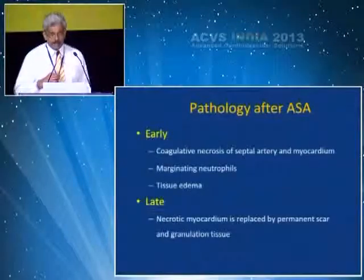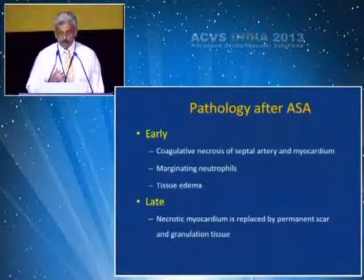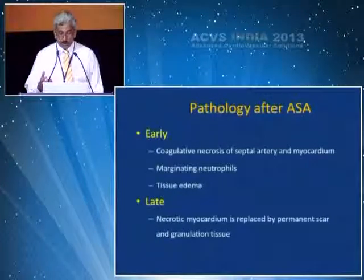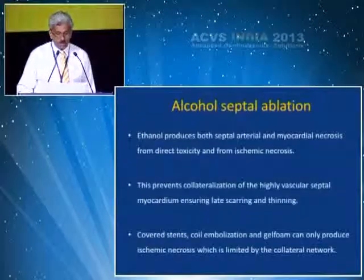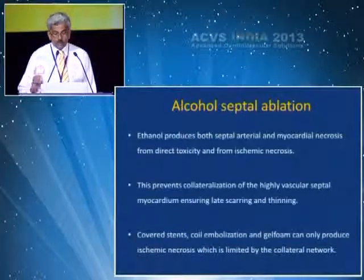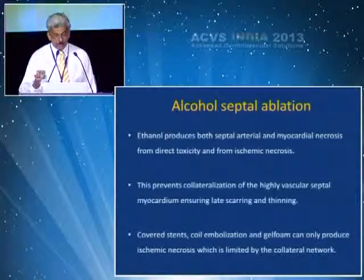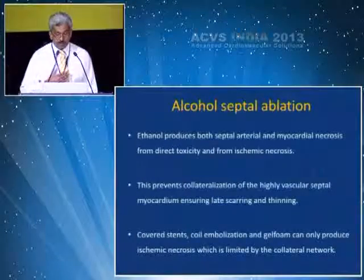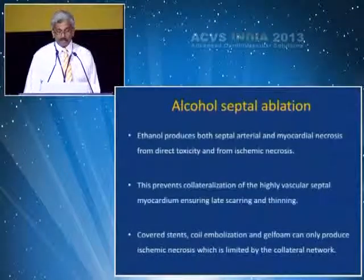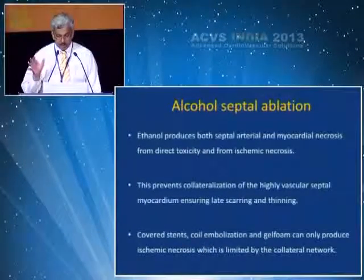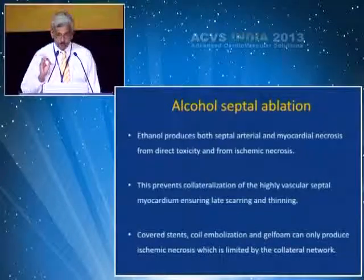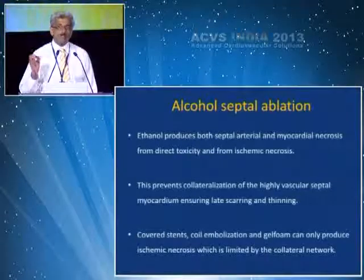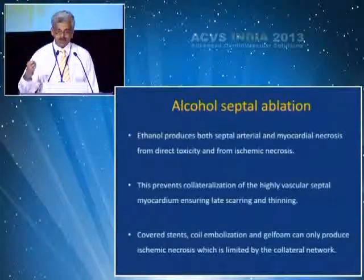The pathology of alcohol septal ablation involves early coagulative necrosis of the septal artery and myocardium, tissue edema, and late replacement of necrotic myocardium by permanent scar and granulation tissue. Alcohol inside the septal artery creates myocardial necrosis from both direct toxicity and ischemic necrosis, preventing collateralization of the highly vascular septal myocardium and ensuring late scarring and thinning. Covered stents, coil embolization, and gel foam only produce ischemic necrosis, which is limited by collateral networking and does not create the extent of myocardial infarction that ethanol creates.